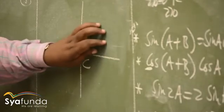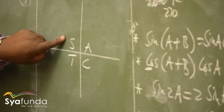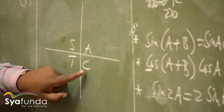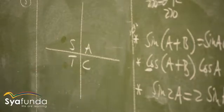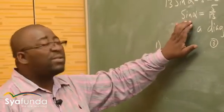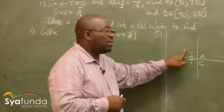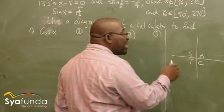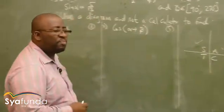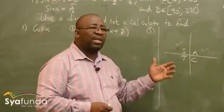The CAST diagram tells me: all ratios are positive in the first quadrant. In the second quadrant, only sine and its reciprocal are positive. In the third quadrant, only tan and cot are positive. In the fourth quadrant, only cos and its reciprocal are positive. Now, sine is positive — that's not just one quadrant for sine. Sine is positive in the first quadrant and the second quadrant. So our diagram might be sketched on the first or the second quadrant. Because that is where sine is positive — it is positive in these two quadrants.